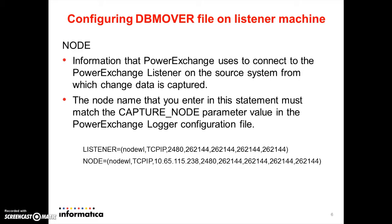On the listener machine — that is the machine where we have the source database — the DBMover node statement is the information PowerExchange uses to connect to the PowerExchange listener on the source system from which change data is captured. This name should match with the capture node parameter value in the PowerExchange Logger. This is the IP address of the Windows machine on which the source DB is residing. All other required statements like CAPI connections have to be specified. For more details, go through the reference manual DBMover statement.